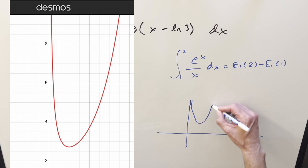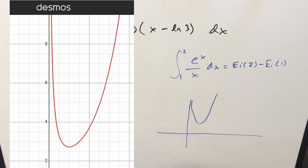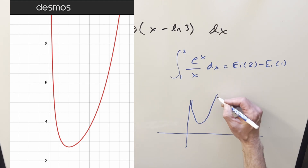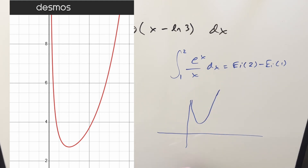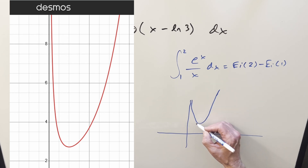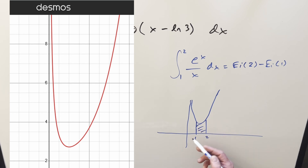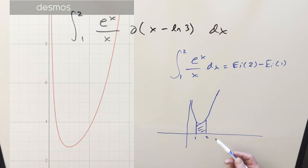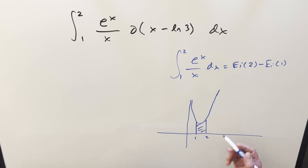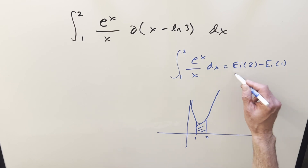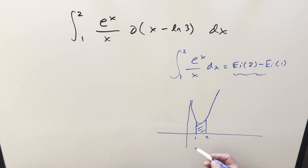From the graph — it really spikes pretty quickly with the exponential — if this is 1 and this is 2, the area is somewhere around 3. You can eyeball it and get pretty close to 3. But as far as getting an exact answer, this approach doesn't help us so much.